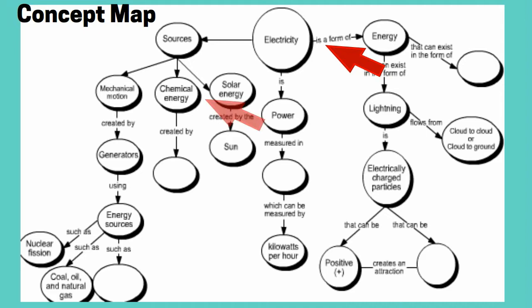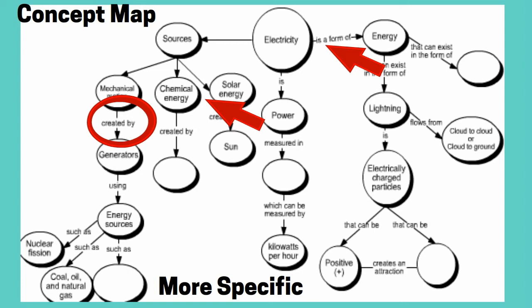A concept map is constructed by placing concept words in ovals and connecting them with linking words. The most general concept is placed at the top, and the words become more specific as you move downward.